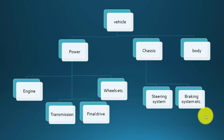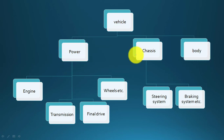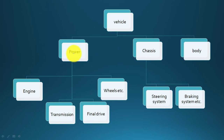Considering vehicle dynamics, we need to understand the particular systems contributing to its study. The vehicle is broadly classified into three major groups. Considering vehicle dynamics, we classify the vehicle into three modules: first, the power module; second, the chassis (JC) module; and third, the body module.